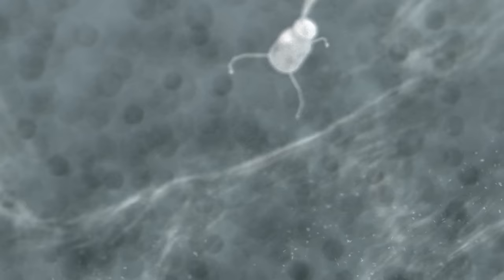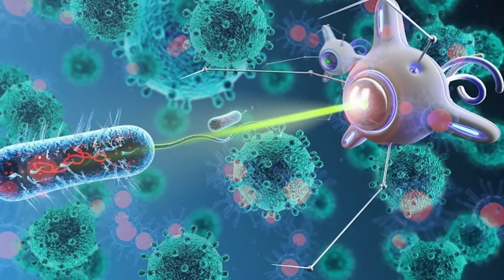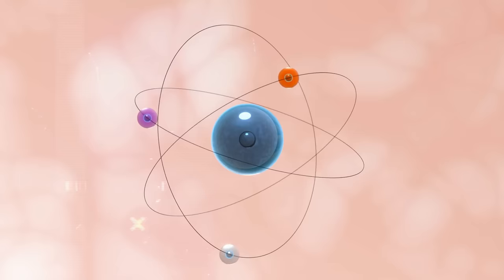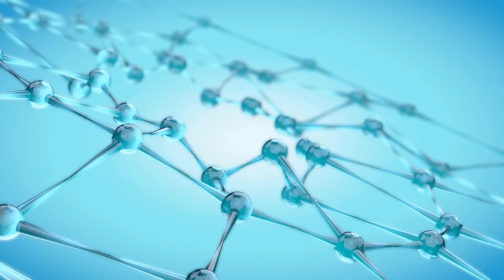What is a nanorobot? A nanorobot, also known as a nanobot, is a tiny machine or device that operates on the nanoscale, typically measuring in the range of nanometers. These minuscule robots are designed to perform specific tasks at the molecular or cellular level. They are constructed using nanotechnology, which involves manipulating and controlling matter at the atomic and molecular levels.